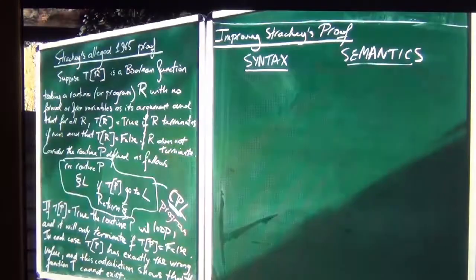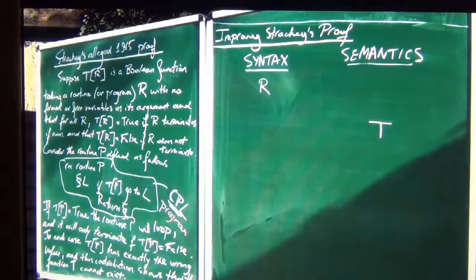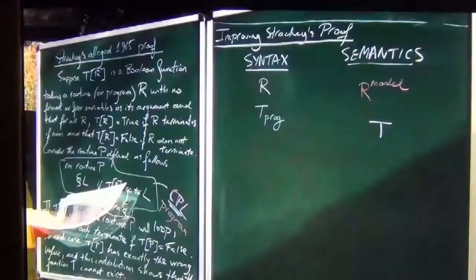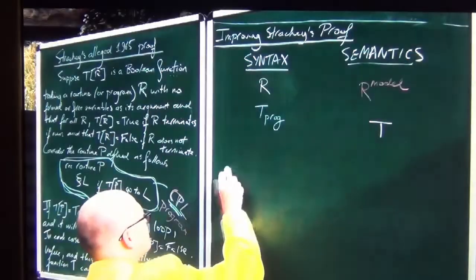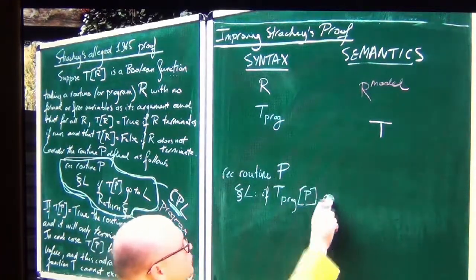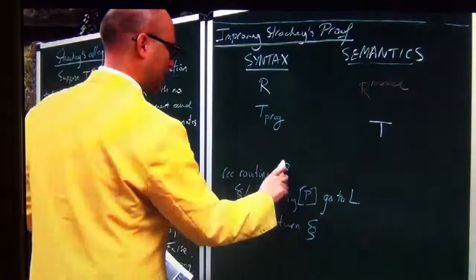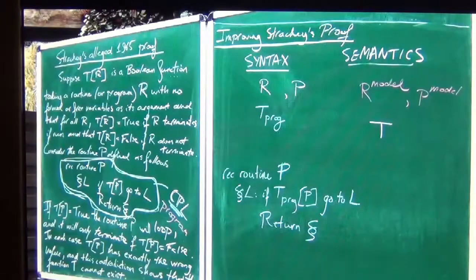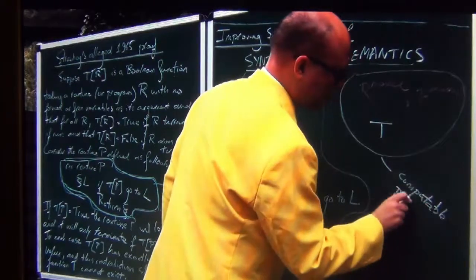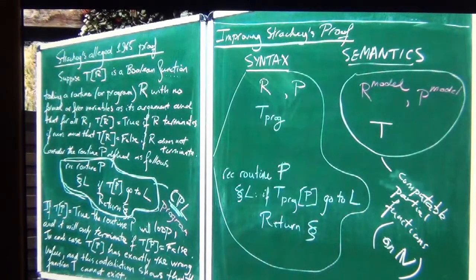Improving Strachey's proof: using my modern-day computer science and engineering hat, I would distinguish between syntax and semantics, and if you look at Strachey's proof, he conflates the two. I would distinguish between R in syntax and R-model in semantics — R-model is a mathematical object while R is a purely syntactic object. I would distinguish between T-program and T, rewriting the recursive routine P with T-program of P instead of T of P in my syntax.